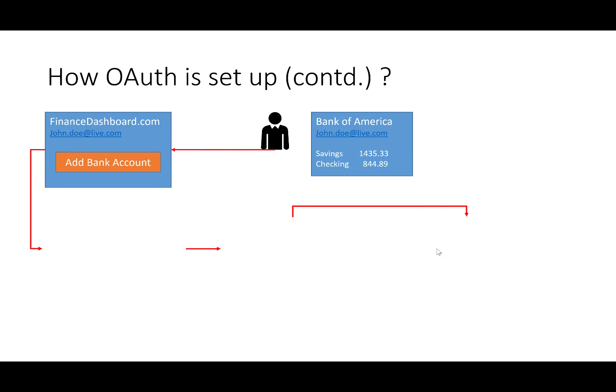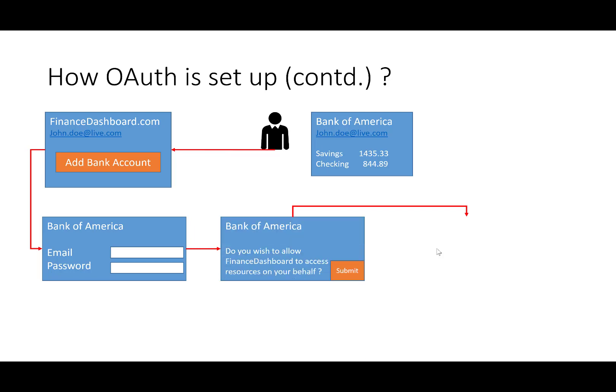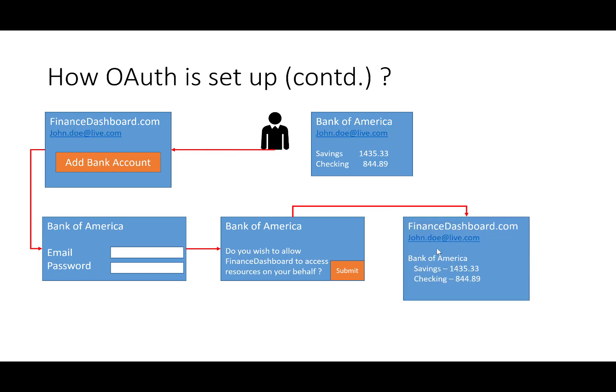The first time John Doe signs into FinanceDashboard, there are initially no bank accounts — just an option to add a bank account. John Doe attempts to add Bank of America. He is then redirected to the Bank of America website, where he is prompted for credentials. Importantly, John Doe is not providing credentials to FinanceDashboard — he is only providing them directly to Bank of America. Upon successful authentication, Bank of America prompts John Doe if he is okay with FinanceDashboard accessing resources on his behalf. Once John Doe agrees, FinanceDashboard is then able to access resources on his behalf.